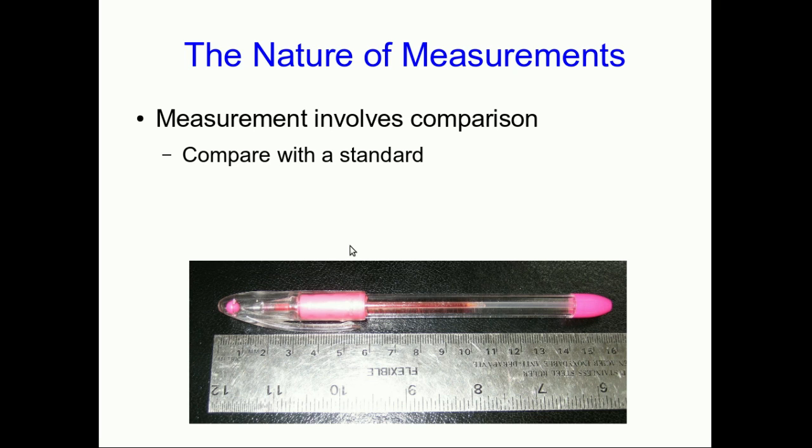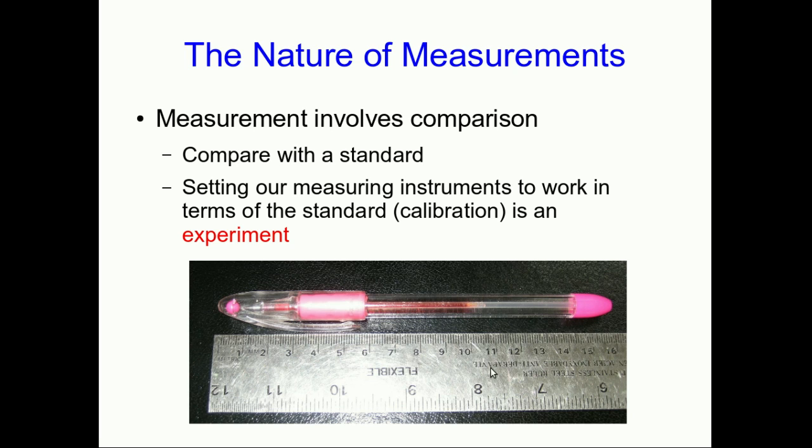The difference between that and doing it with a ruler is that when you're doing it with the ruler you're working with an agreed-upon standard so that your measurement is meaningful to other people. And that standard, which was used to mark off your ruler, involved a calibration, which is a sort of an experiment.